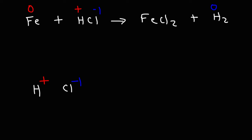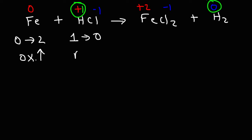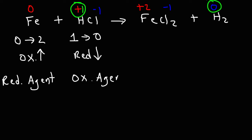In FeCl₂, chlorine also has a negative one charge, which means Fe has a plus two oxidation state. So for Fe, the oxidation state goes from zero to two — it goes up. For chlorine it doesn't change, but for hydrogen it goes from plus one to zero, so hydrogen was reduced. Thus, iron metal is the reducing agent in this reaction, and hydrochloric acid is the oxidizing agent, even though it was the hydrogen part of HCl that was reduced.